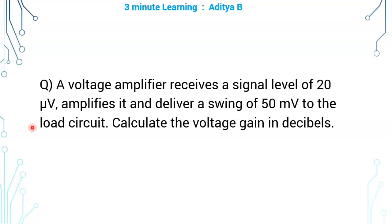A voltage amplifier receives a signal level of 20 µV, amplifies it and delivers a swing of 50 mV to the load circuit. Calculate the voltage gain in decibels.